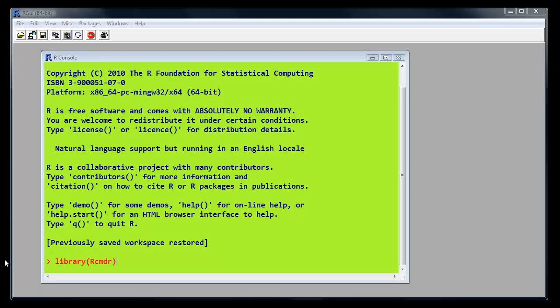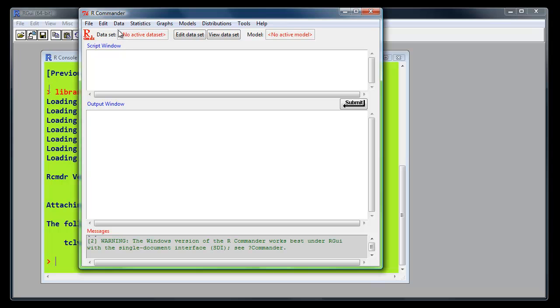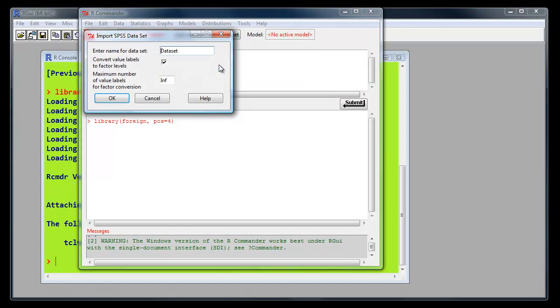In R, we'll load R Commander to begin with: library(Rcmdr). Once we have the R Commander interface, we'll load the data by using import data from SPSS data file. Call it MyDataFrame.